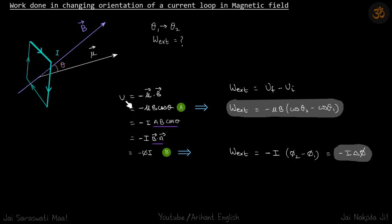Interaction energy u is minus mu dot B, and we know that external work is always final potential energy minus initial potential energy.